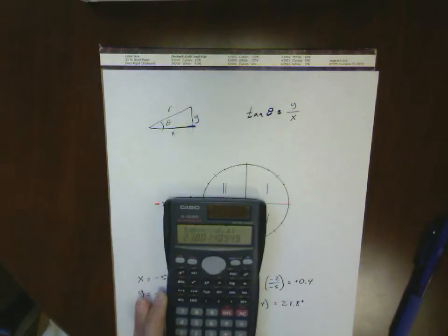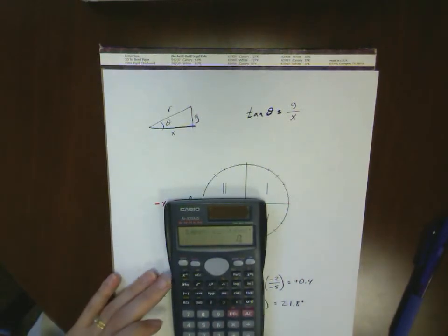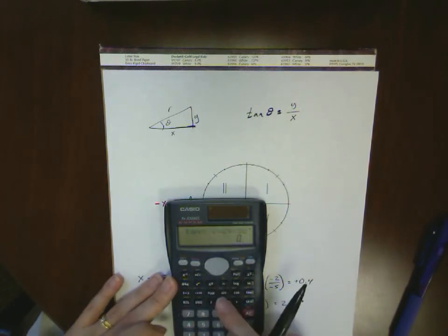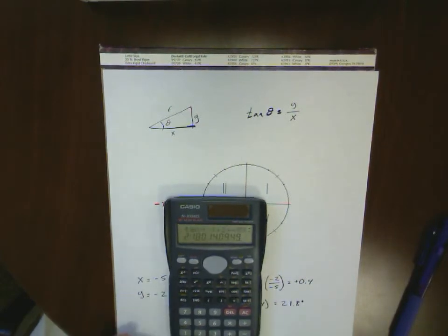Well, you might think, okay, it's just the way I put it into my calculator. What if I put into my calculator the inverse tangent of negative 2 divided by negative 5? Now I've explicitly told that both of those numbers are negative. Hit my equal sign, but it still gives me a positive 21.8 degrees.